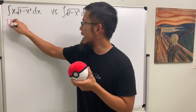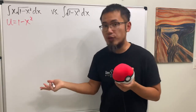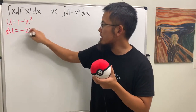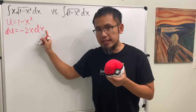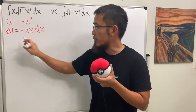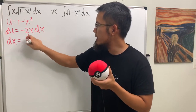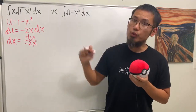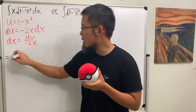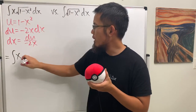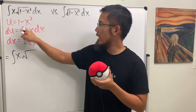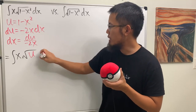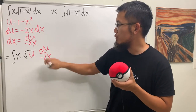Let u equal to the inside, namely 1 minus x squared, and then differentiate both sides. We get du, that's going to be the derivative of this, which is negative 2x dx. Isolating dx by dividing both sides, we get dx equal to du over negative 2x. Then we take the integral to the u world, and the x stays by the square root. Now we have just the square root of u, and dx becomes du over negative 2x.